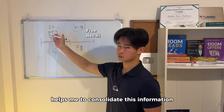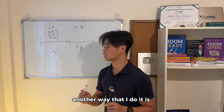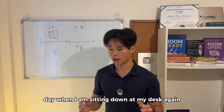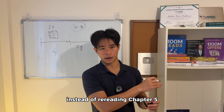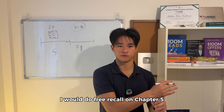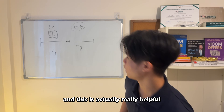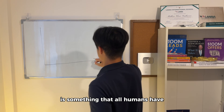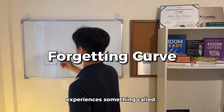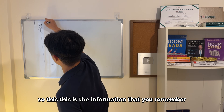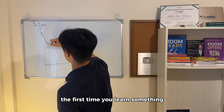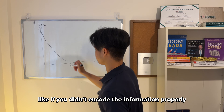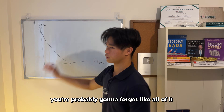Another way I do it is after spacing it out for one day. For example, I learned chapter five today — the next day, when I'm sitting down at my desk again, instead of rereading chapter five, I would do free recall on chapter five first, and then read the textbook. This is actually really helpful because of something called the forgetting curve. The forgetting curve is something all humans experience. The first time you learn something, it's very hard to remember the information if you didn't encode it very properly. After maybe one day, you're probably going to forget most of it.